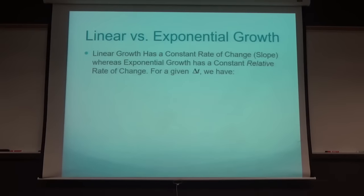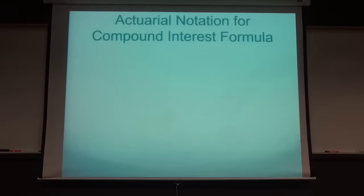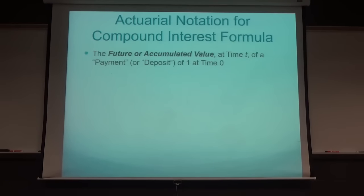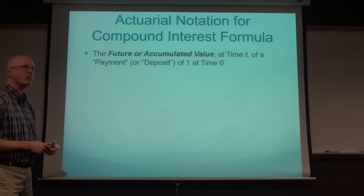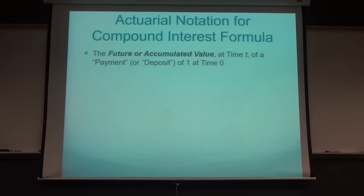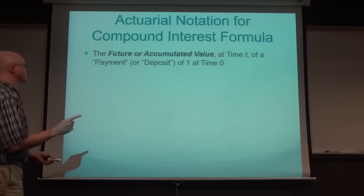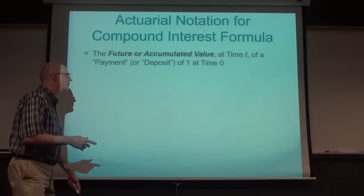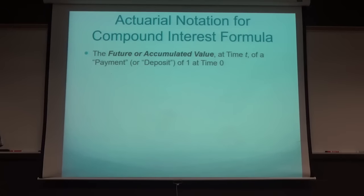So that's linear versus exponential growth. What about actuarial notation for compound interest? The future or accumulated value at time T of a payment of one (one dollar, one euro, one pound) at time zero is given by this expression here.